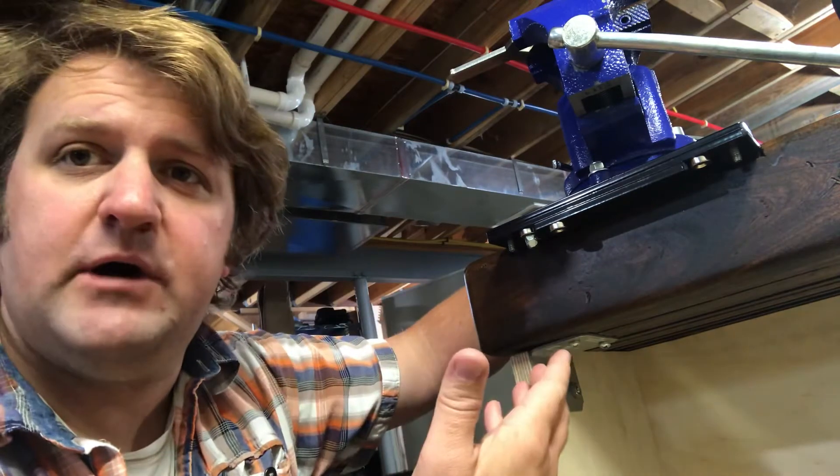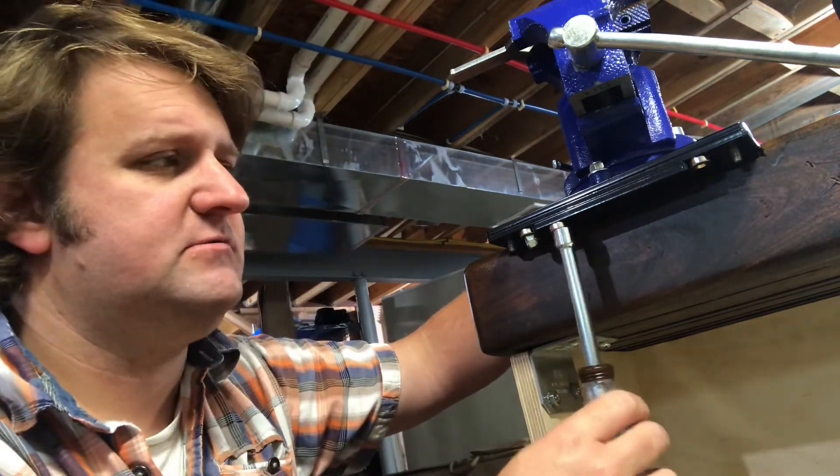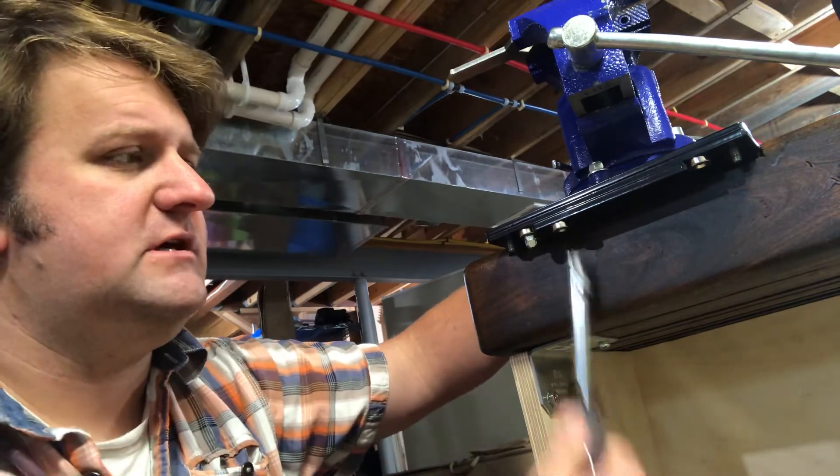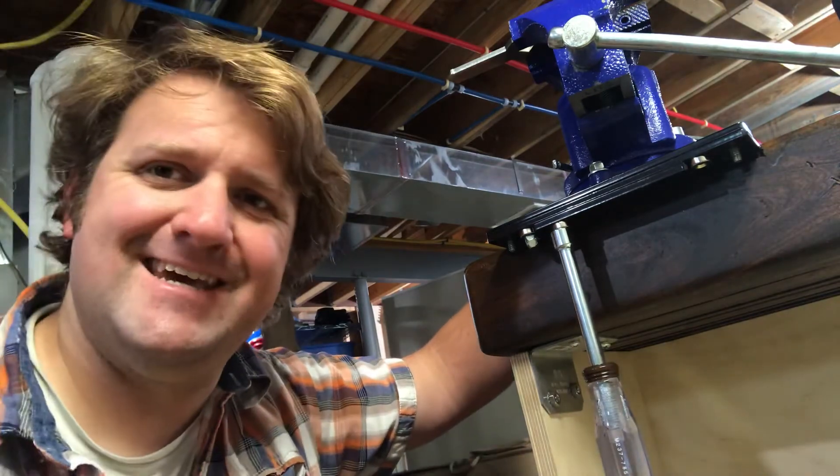So, obviously, by getting away from a wingnut, I now need a tool, so I have a 7/16ths wrench that can hang right there. Now when I need to do this, I just pull down, put my nut on, pull it back, and I'm ready to go.